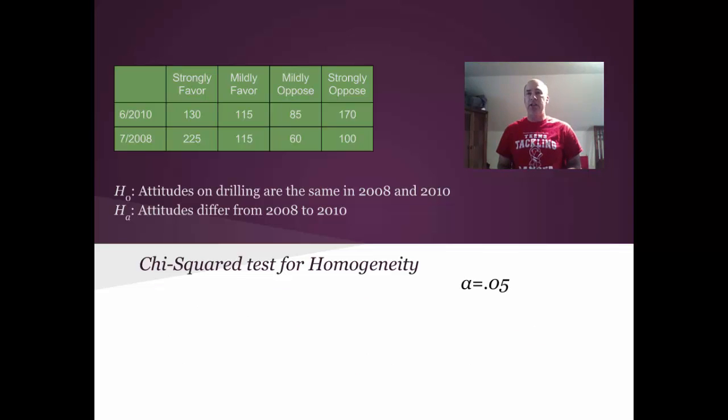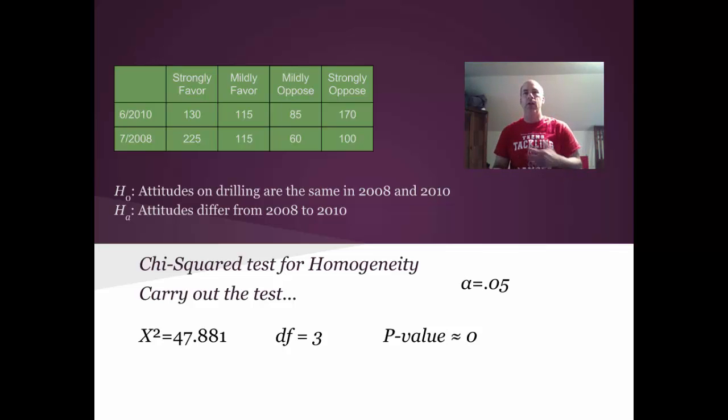And now we're just going to dive into the nuts and bolts of the test here. We'll use alpha, a 5% level. We're going to carry out the test now. The chi-squared statistic is 47.881. Degrees of freedom is 3. Remember, rows minus 1 times columns minus 1 equals 3. And that gives you a p-value of essentially zero. And again, we'll use textbook tables and technology to do this. You can verify both ways that we get a p-value of approximately zero.